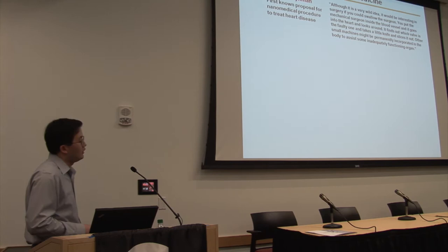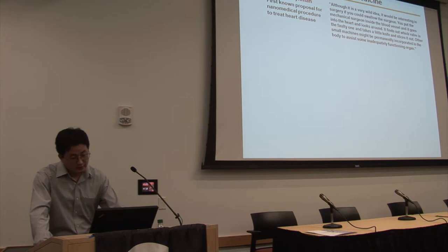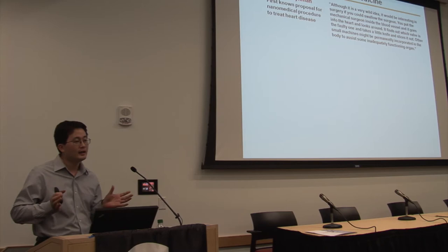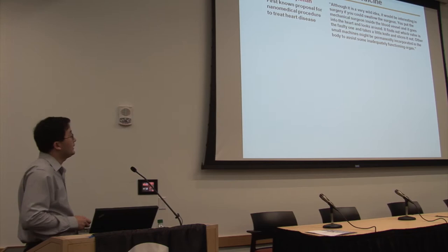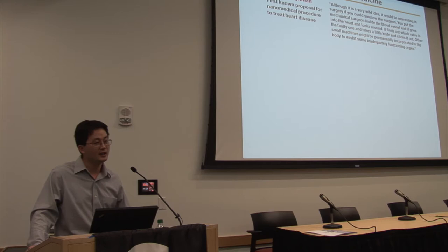Although the first drug was approved in 1995, the concept of nanomedicine was proposed many years before. The first on-record proposal about nanomedicine was written by Professor Richard Feynman in 1959. It was a very wild idea — he said it would be interesting to do surgery if you could swallow a surgeon into the body, and this surgeon could swim to the place, look around to find which valve of the heart is wrong, take a little knife, cut it, and repair it. Of course, it was not funded — and Feynman later won the Nobel Prize in physics in 1965 for quantum electrodynamics.